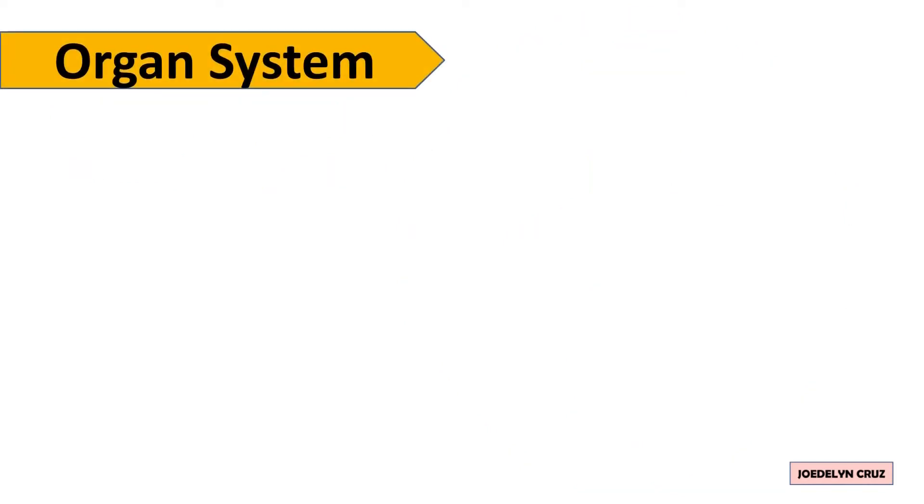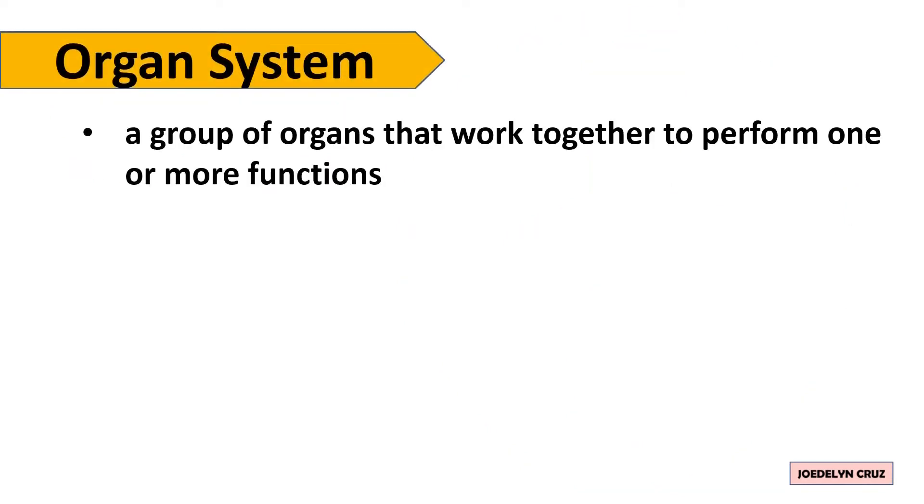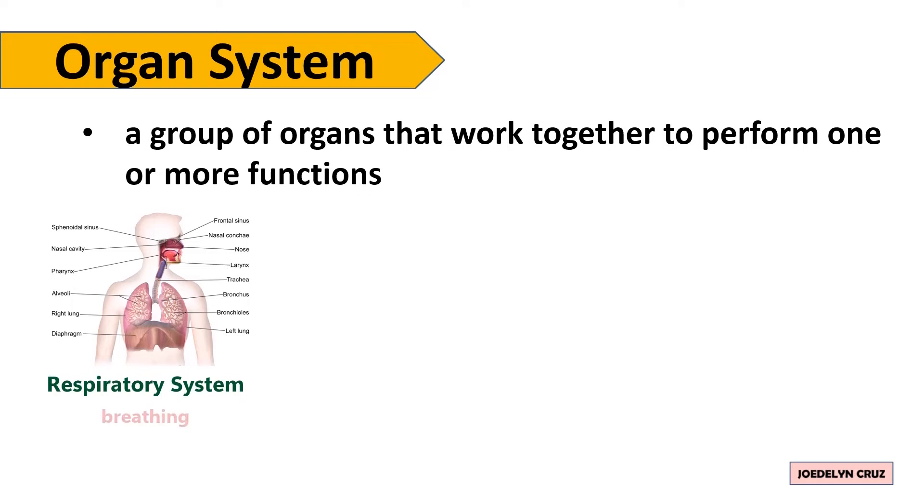An organ system is a group of organs that work together to perform one or more functions. Examples include the respiratory system that we use for breathing,